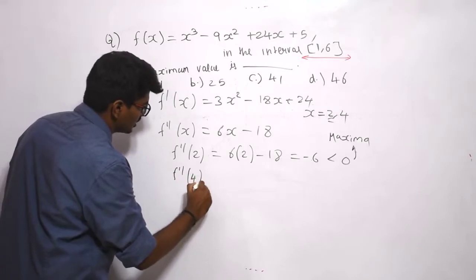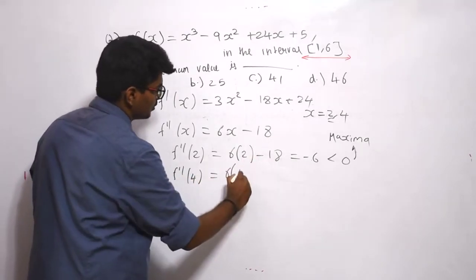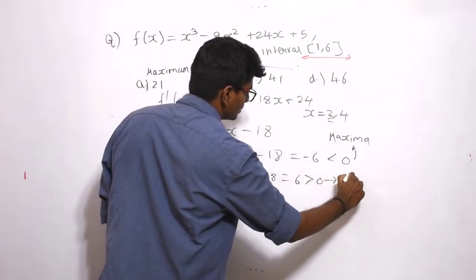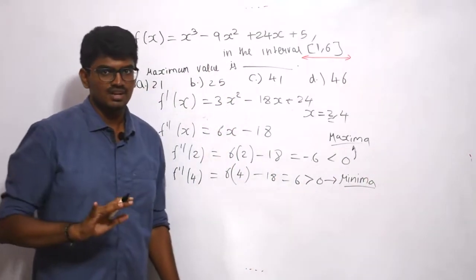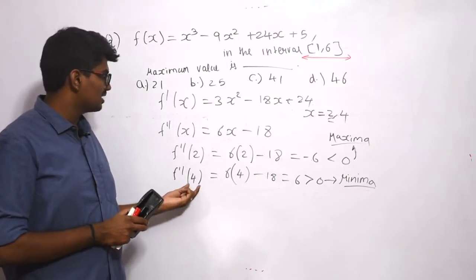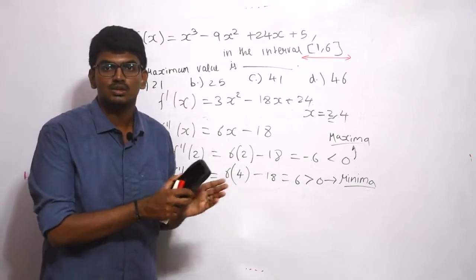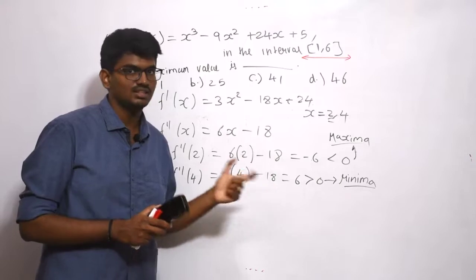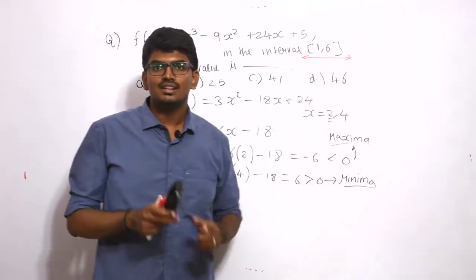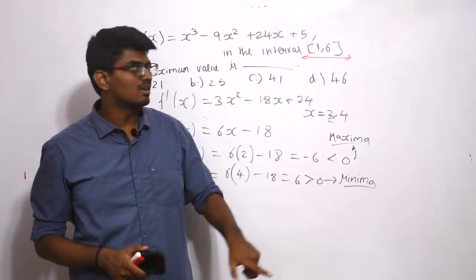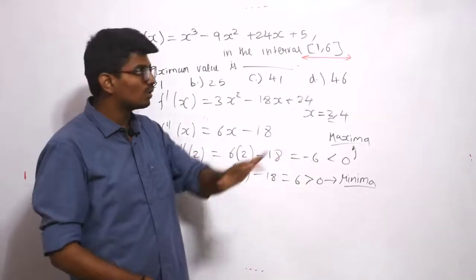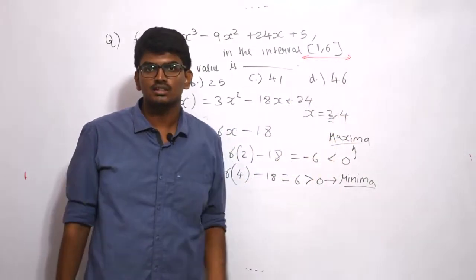For x = 4: f''(4) = 24 - 18 = 6, which is greater than 0, so it corresponds to minima. But because the interval is a closed bracket, there is also the possibility that the function reaches its maximum at the endpoints 1 and 6. Not only the interior critical points — 1 and 6 are also possible candidates.